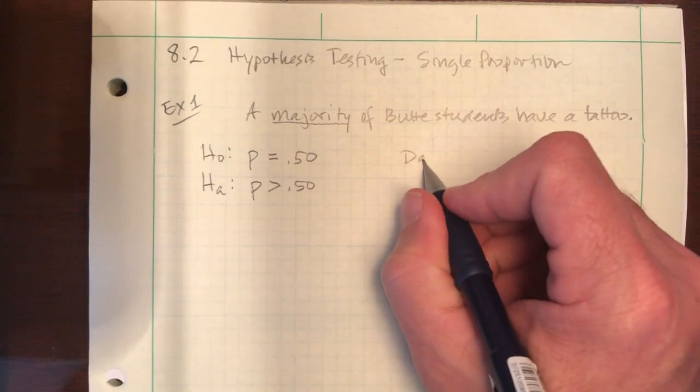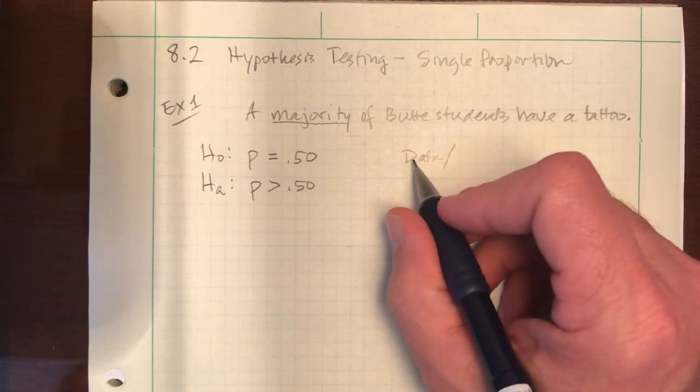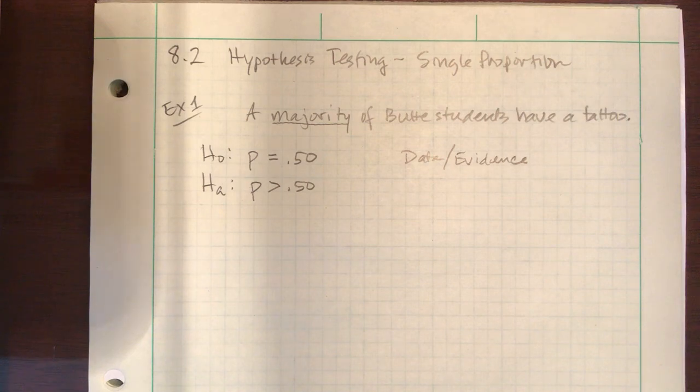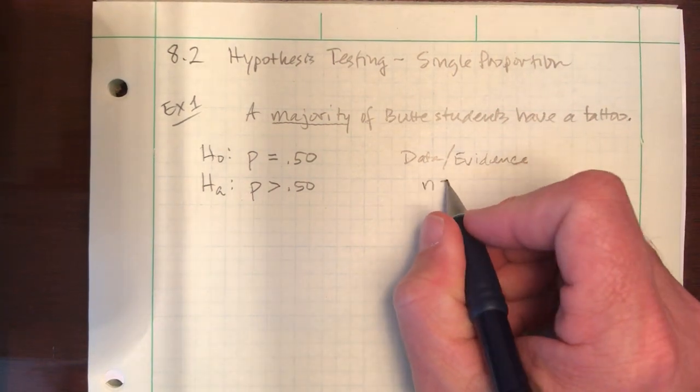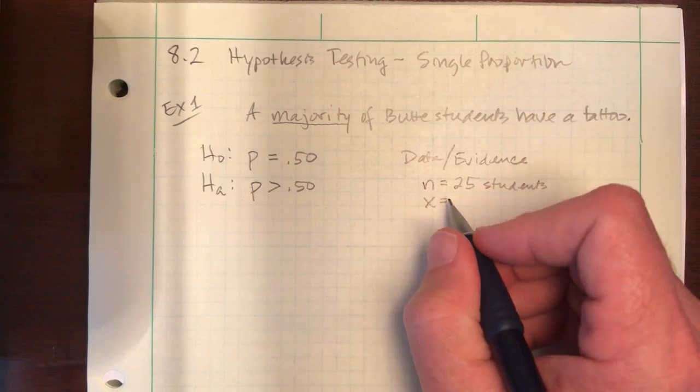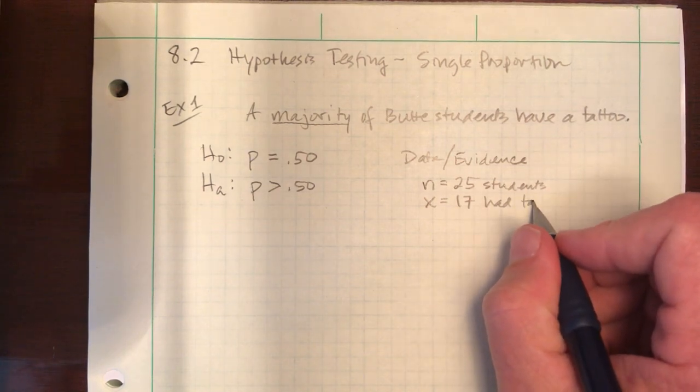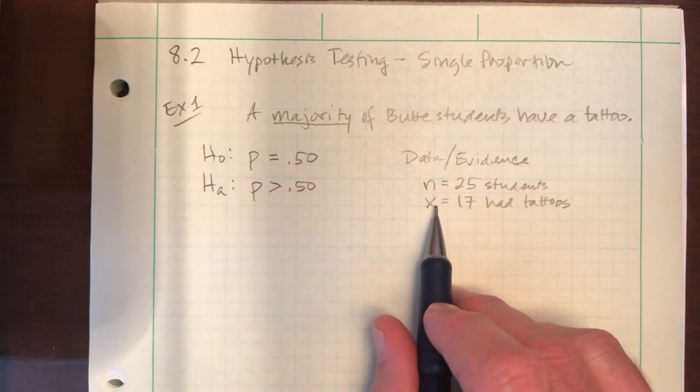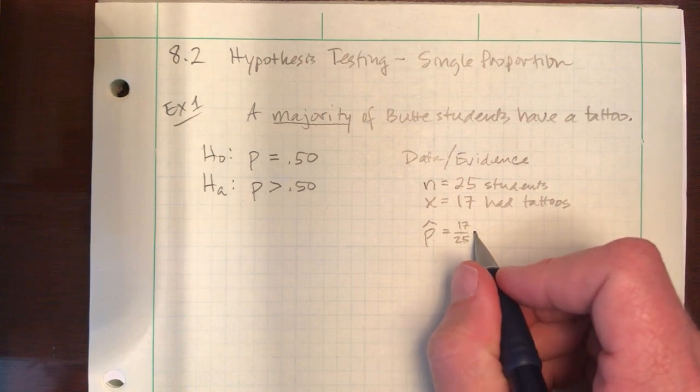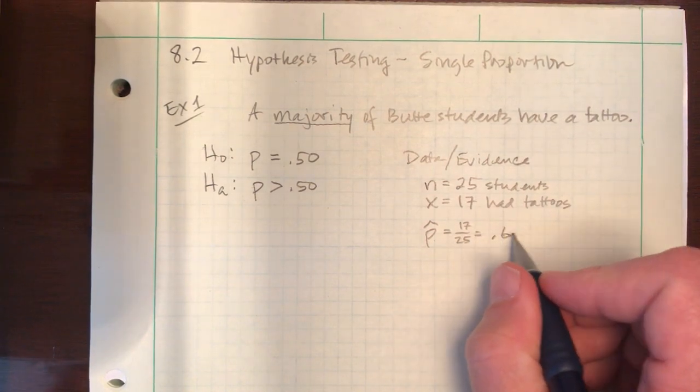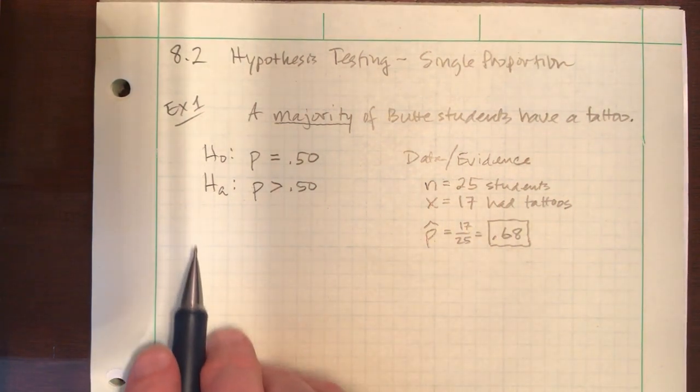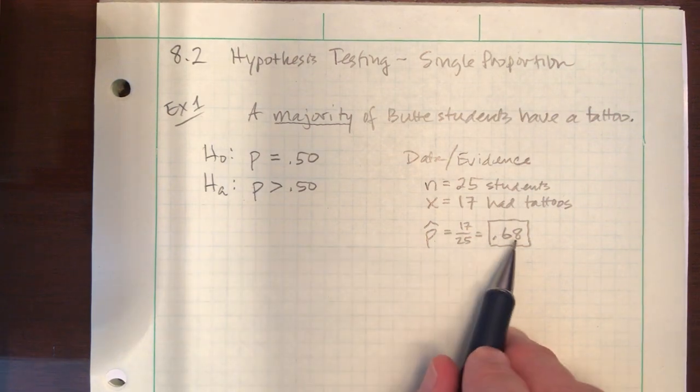Step two is where the problem brings in data or the evidence for this hypothesis test. We're going to imagine that a sample of 25 students were surveyed and of those 25, 17 had tattoos. So with n and x we can create our point estimate, my sample proportion, and 17 out of 25, grab your calculator you'll agree, is 0.68. So right now I want us to look at this evidence, go back to our two statements.